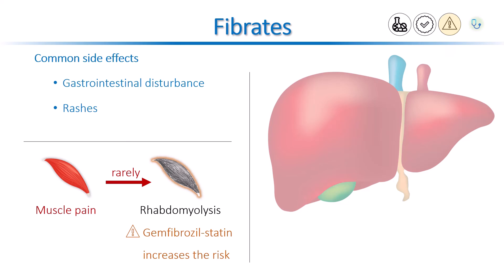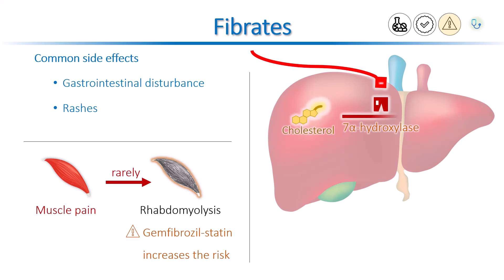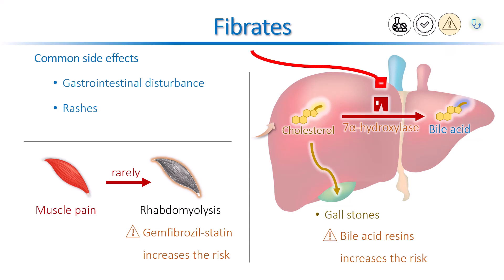In the liver, fibrates decrease the activity of an enzyme called cholesterol-7-alpha-hydroxylase, which is needed to convert cholesterol to bile acid. Inhibition of 7-alpha-hydroxylase increases cholesterol excretion into the bile, promoting the formation of gallstones. Another class of lipid-lowering medications called bile acid resins also cause gallstone formation, and when used together with fibrates, the risk of developing gallstones is increased even more.